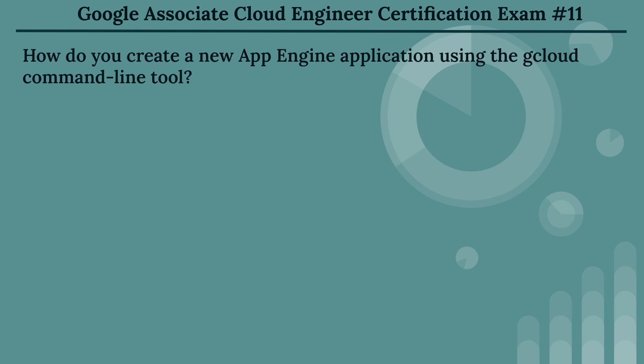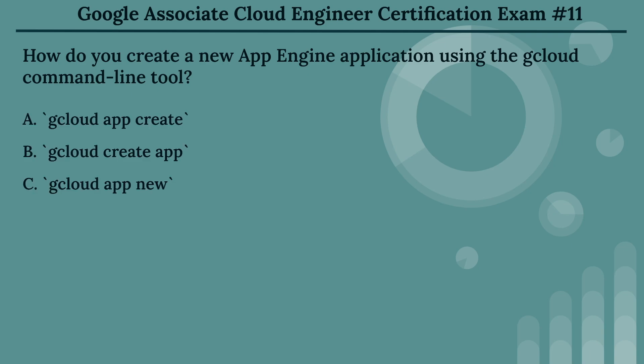The eleventh question: how do you create a new App Engine application using the cloud command line tool? The options are: Option A, gcloud app create. Option B, gcloud create app. Option C, gcloud app new. Option D, gcloud app deploy.